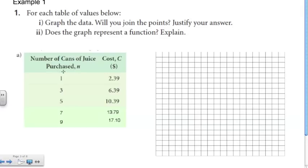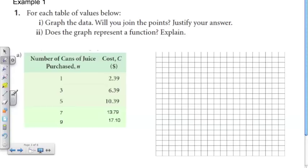Let's look at the table. We have our domain here, or our independent variable, which is number of cans of juice represented by n. And then we have our dependent variable, or our range, which is the cost of the juice, which is here.